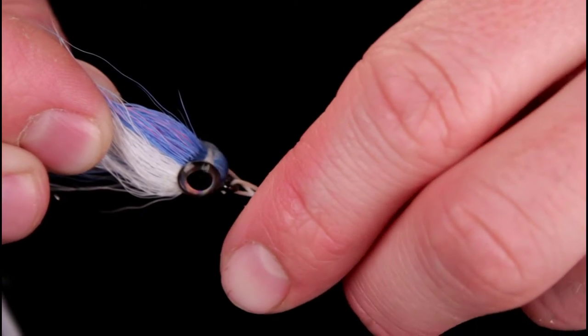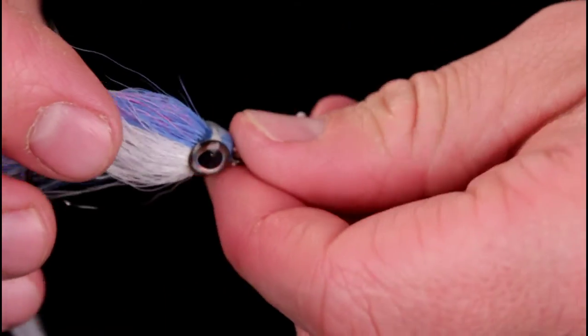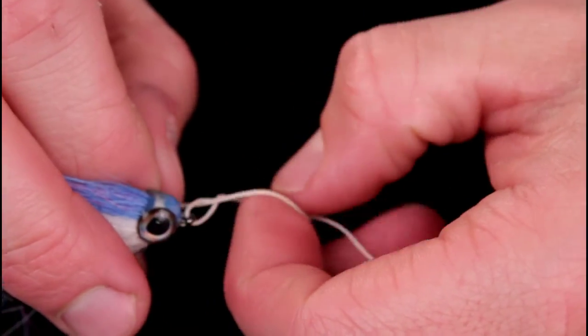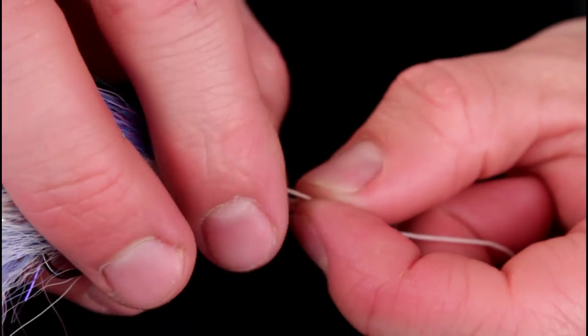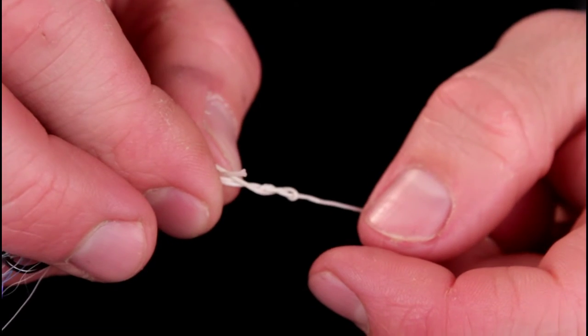Put the tag end of the tippet through the hole created by the twists next to the eye of the hook. Next bring the tippet back through the loop created from the previous step.